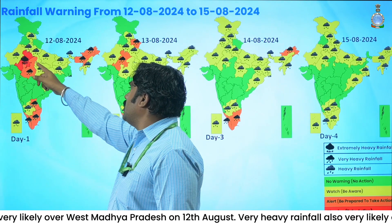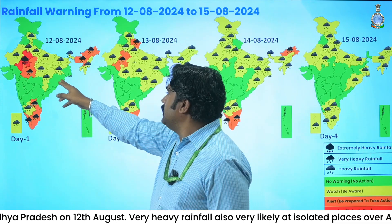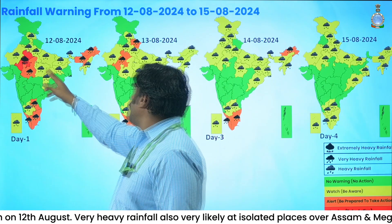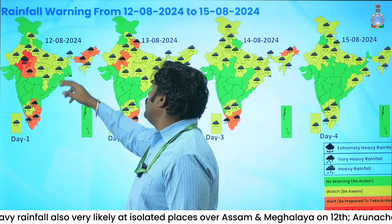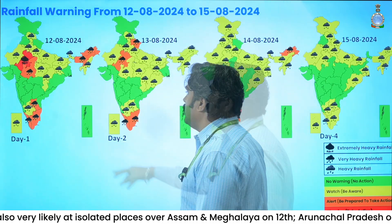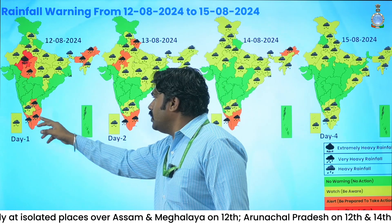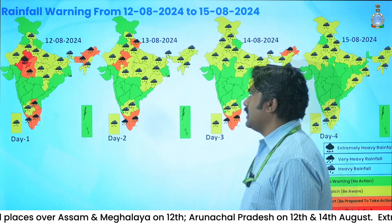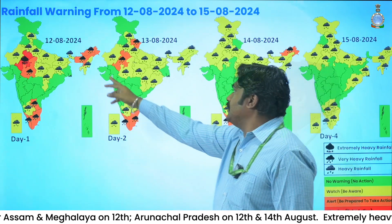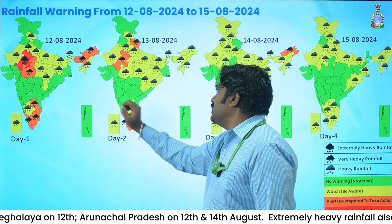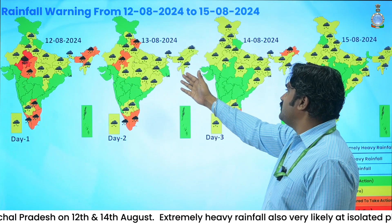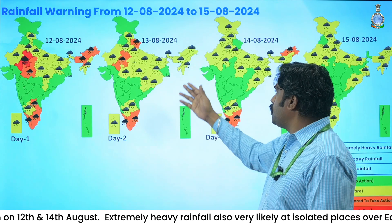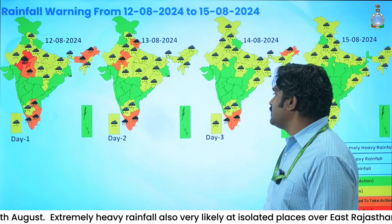Heavy rainfall warnings have been issued over Haryana, Uttar Pradesh, east Madhya Pradesh, Chhattisgarh, Bihar, Jharkhand, south interior Karnataka, and the NMT region. This is the Day 2 warning valid for tomorrow, 13th August.